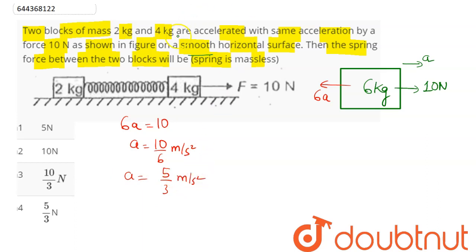Now to find the spring force, if we consider FBD of 4kg block, this 4kg block has force 10N, acceleration here is same for both blocks, so 5 by 3. Hence spring force on this 4kg block will be acting backwards, so spring force FSP and pseudo force acting opposite to the direction of acceleration, so 4 into A.